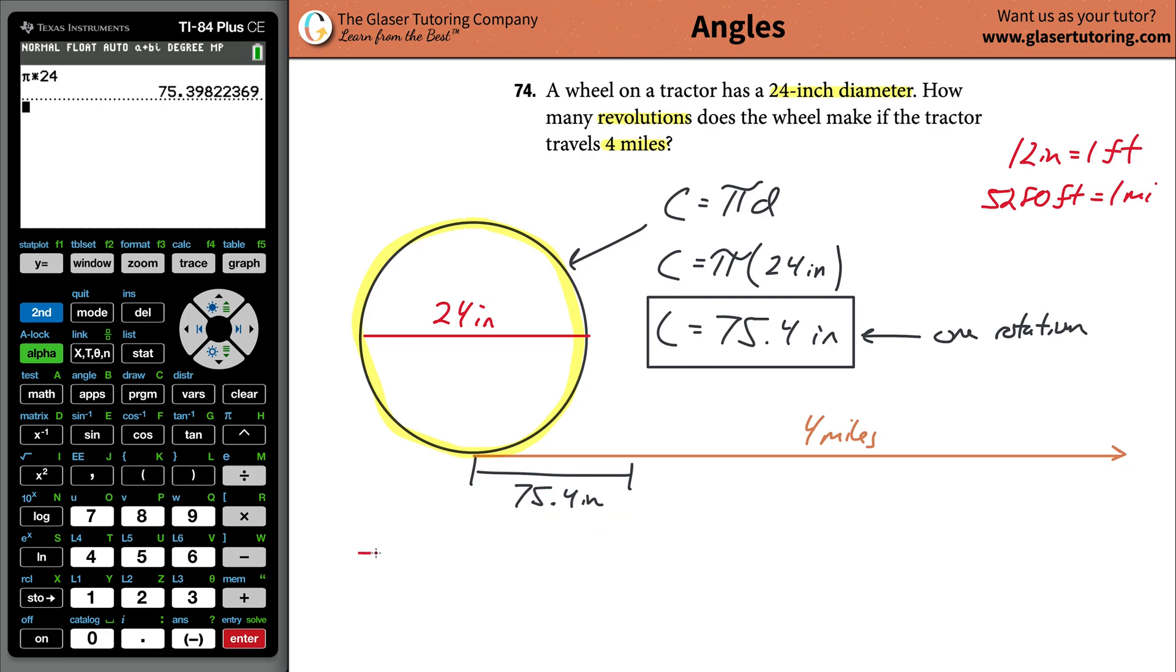I'm going to take my given value of 75.4 inches. To do this conversion, whatever unit I want to cancel up here, I plug into the bottom. Whatever unit I want to find, I'm going to plug into the top. If you have inches here and miles here, you need to know a relationship between inches and miles. If you don't know that, you can't go to miles first. You have to first go to feet.